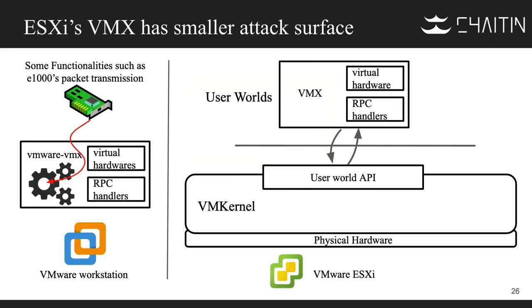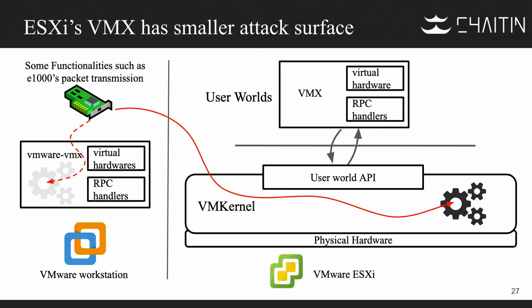Finally, we think that the VMX of ESXi has a smaller attack surface. After comparing the VMX binary between the Workstation and the ESXi, we found that some functions have been moved from the VMX in the user world to the VMkernel. For example, the packet transmission function in the E1000 network card has been moved from VMX to the VMkernel. You can notice that many vulnerabilities exist in the packet transmission part of E1000 — and all these vulnerabilities only affect Workstation. So the VMX of ESXi has a smaller attack surface.